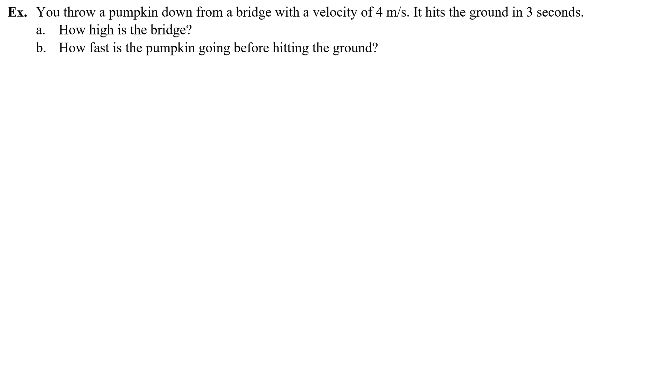In this video we're going to do a free fall problem where you initially throw an object down. So you throw a pumpkin down from a bridge with a velocity of four meters per second. It hits the ground in three seconds. How high is the bridge and how fast is the pumpkin going before hitting the ground?